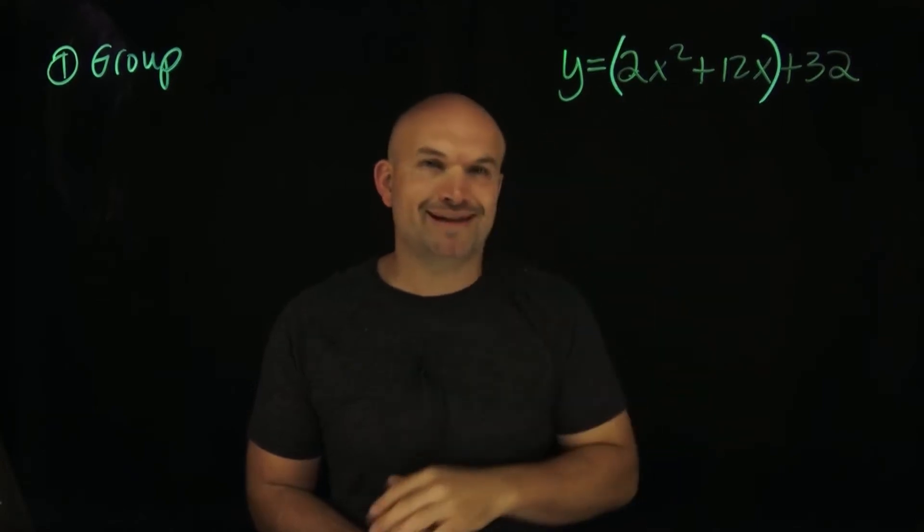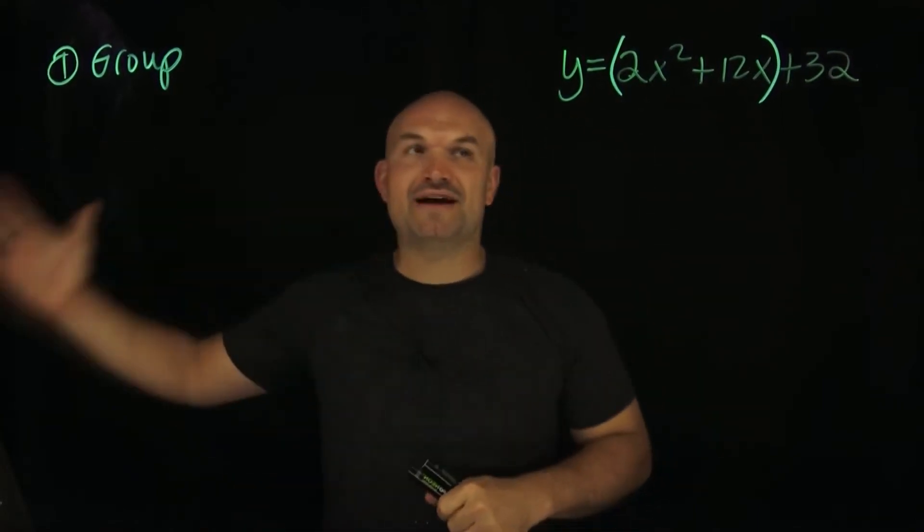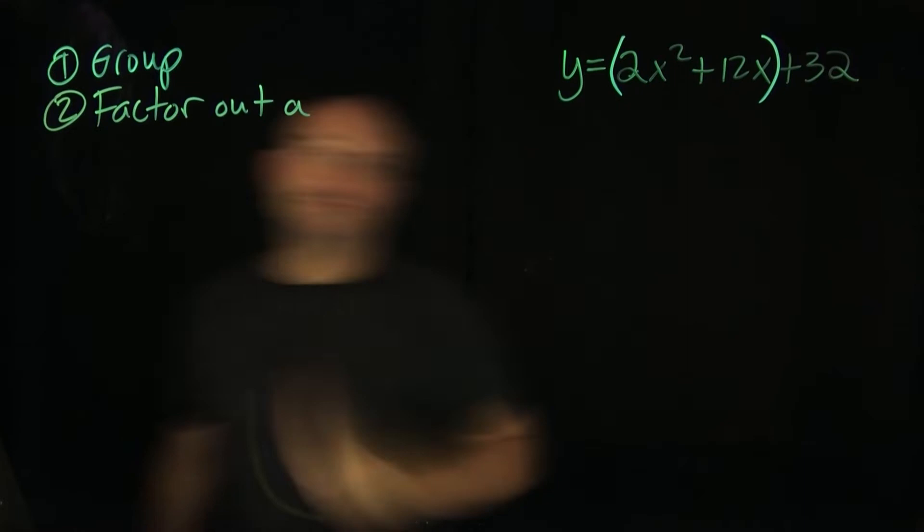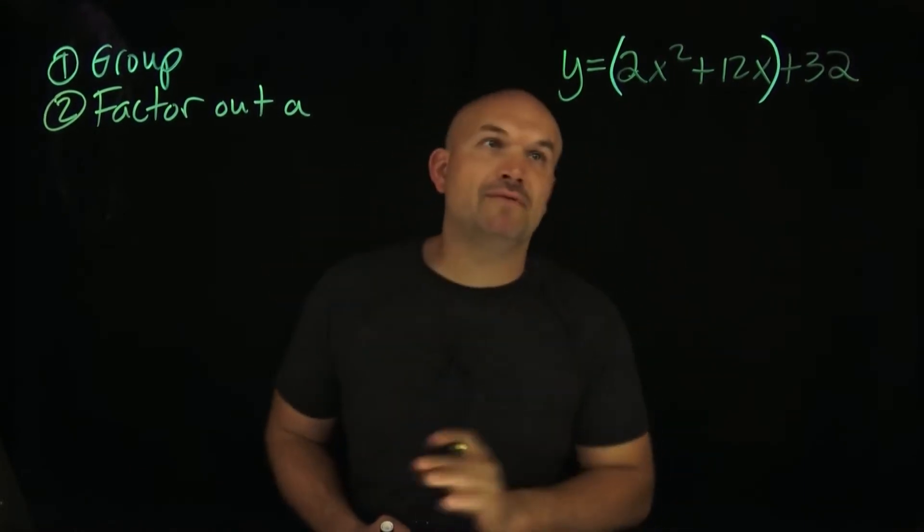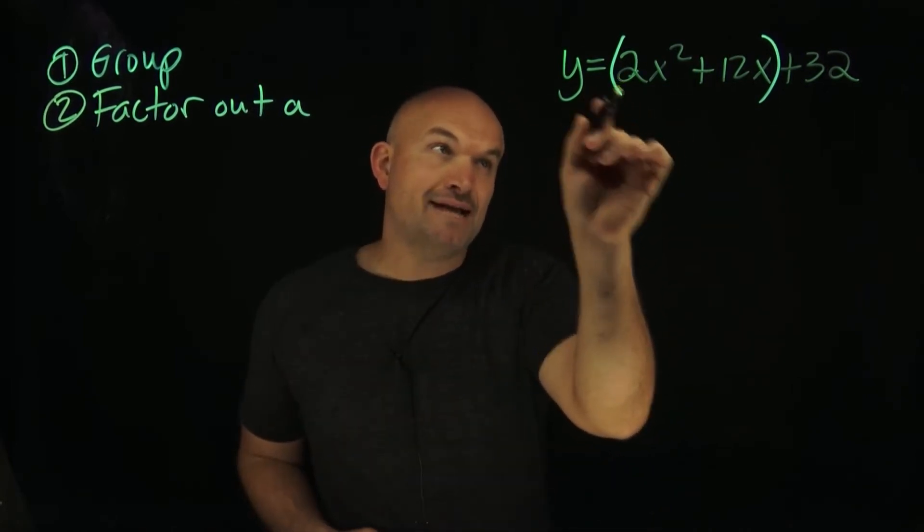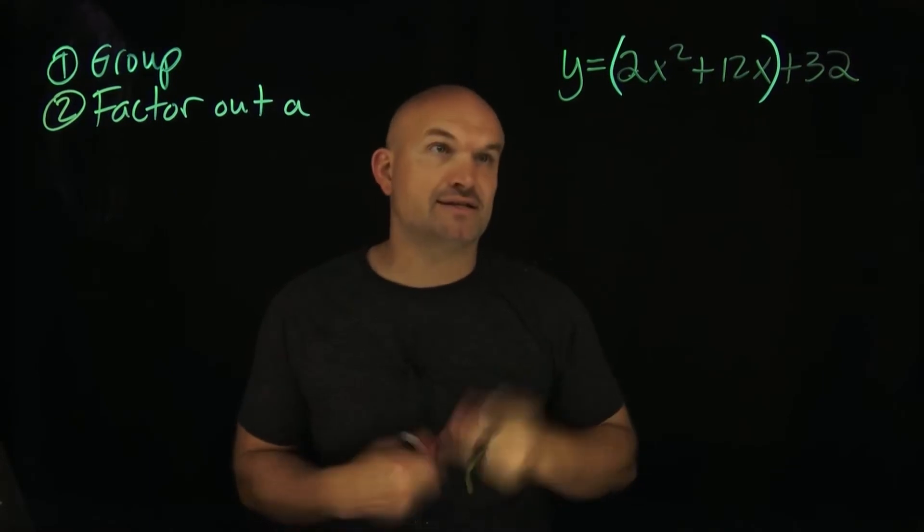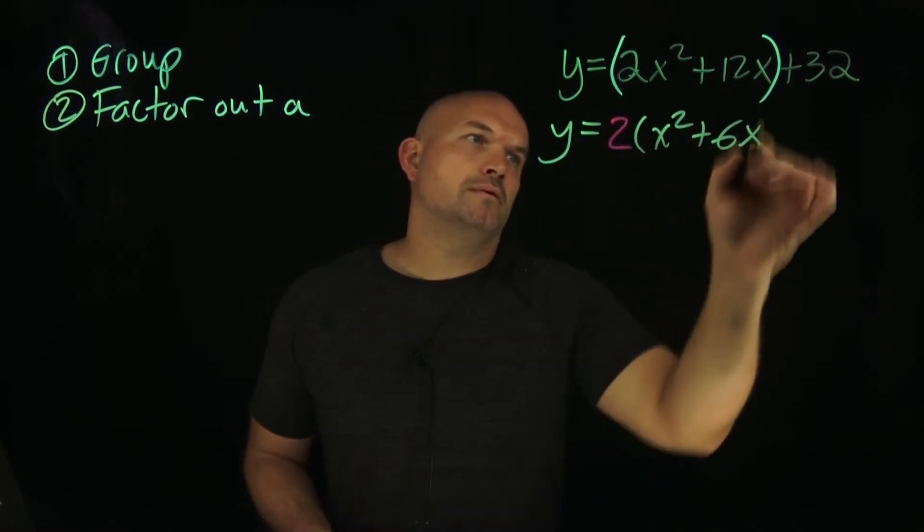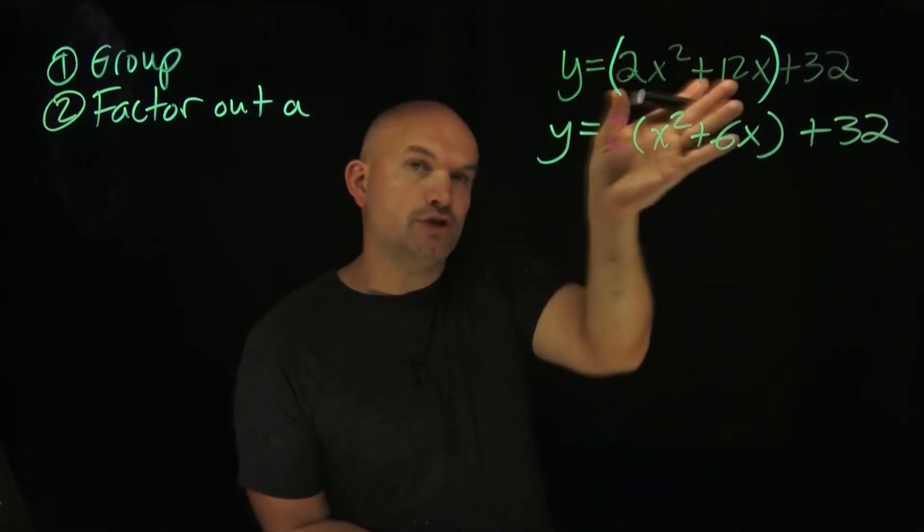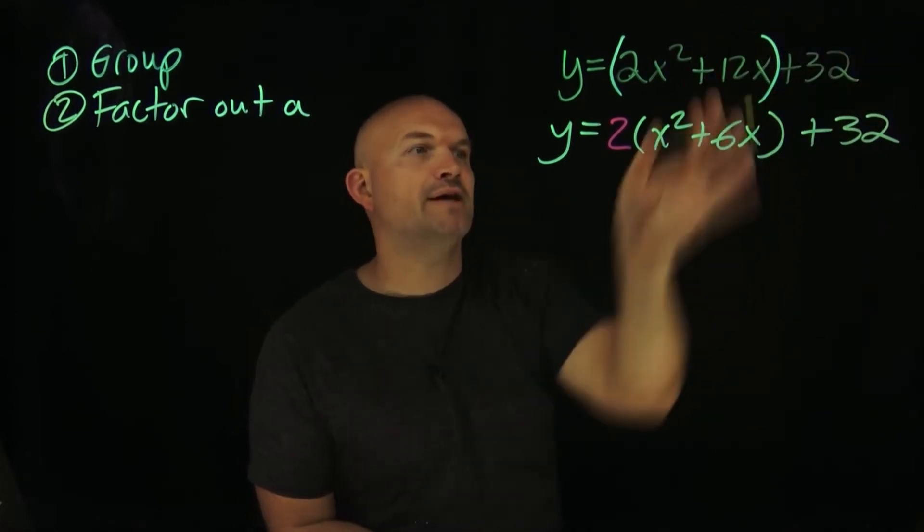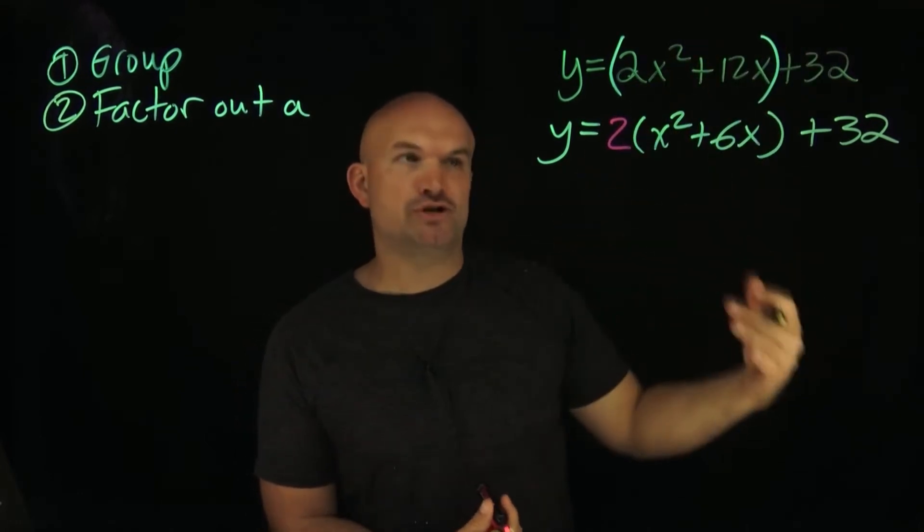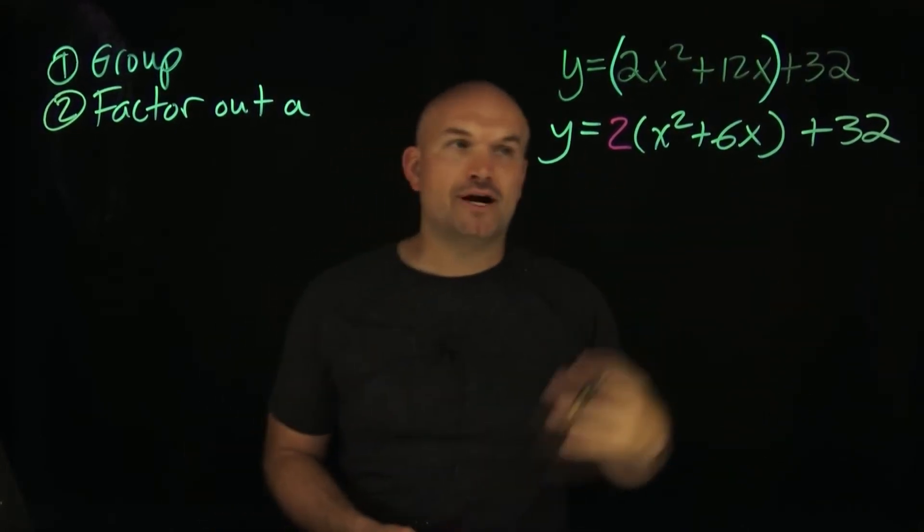But before we do that, we got to get rid of that 2. So we're going to factor out the a, in this case the a is going to be 2. Basically what you're doing is you're going to be dividing out the coefficient from both of these terms. What I did here is by only grouping these first two terms, I didn't have to touch the 32. I just was able to factor the 2 out of these two terms, and this 32 is just preserved in this case.